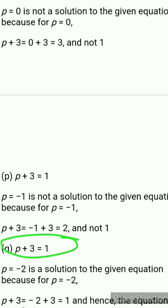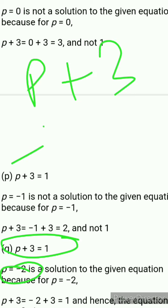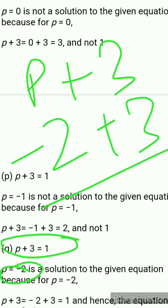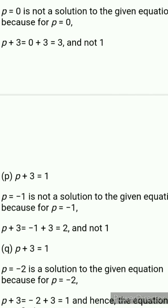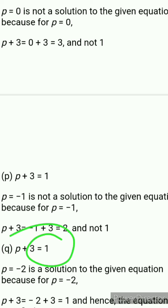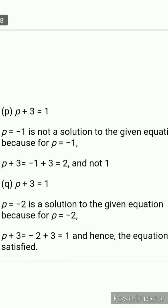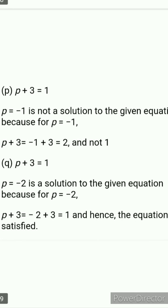Last one is p plus 3 equals 1 where p equals negative 2. Put negative 2 in place of p: negative 2 plus 3 equals 1. This time the equation is satisfied because for p equals negative 2 the value is 1, which equals the right-hand side. So this is the answer to your last question.